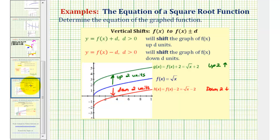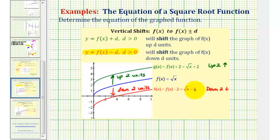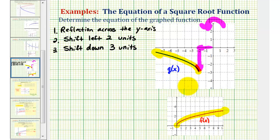Finally for the vertical shift, since we have a shift down, y equals f of x minus d, where d is positive, will shift f of x down d units. So looking at the graph of the red square root function, y equals the square root of x minus two — where the minus two is not underneath the square root — will shift the function down two units. Let's go back to our example and write g of x first in terms of f of x, then write the actual equation for g of x.